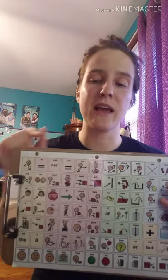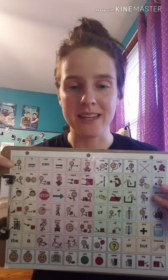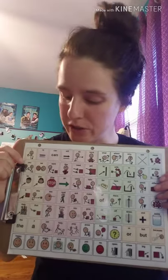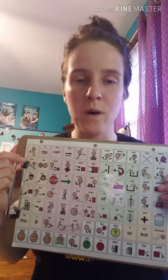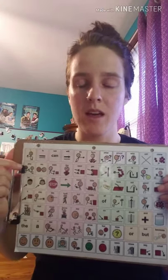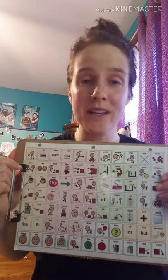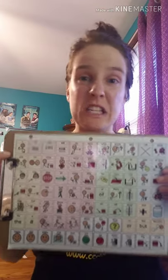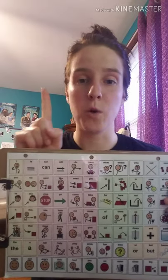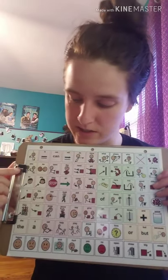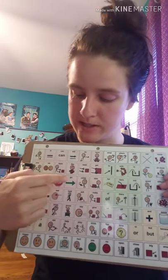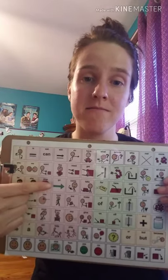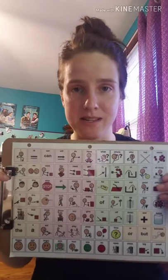One other little thing on modeling is the one-up rule, which means if they are currently touching one picture at a time, then you can model two pictures at a time. If they're not using it at all, just modeling one at a time is good — like saying 'go' when something is going, or 'stop' when something is stopping.